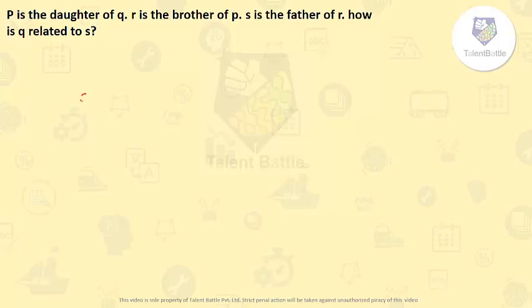So P is daughter of Q, first statement. P is daughter of Q. Second, R is brother of P. So R is brother of P.